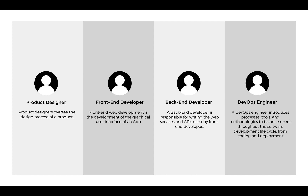When the front-end developers are done with their part of the project, they move it to the back-end developers. The back-end developer is responsible for writing the web services and APIs used by front-end developers. In other words, back-end developers are the people who connect the front end to the database. For example, when you fill in a form and click submit, that data is moved from the front end and stored in a database — the back-end developers handle that by creating an API, which stands for Application Programming Interface.